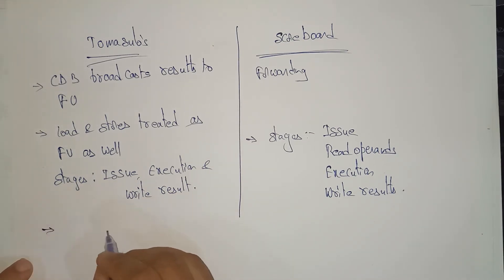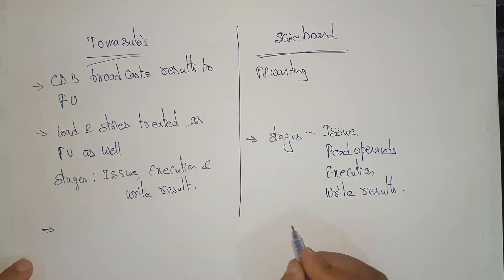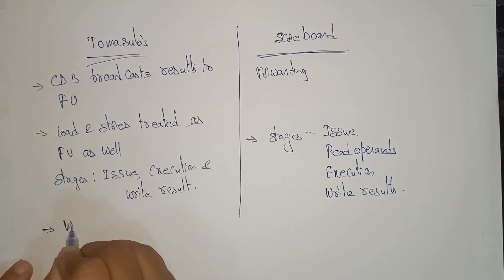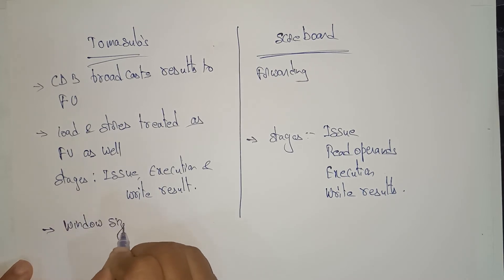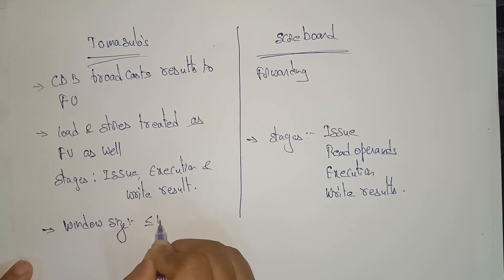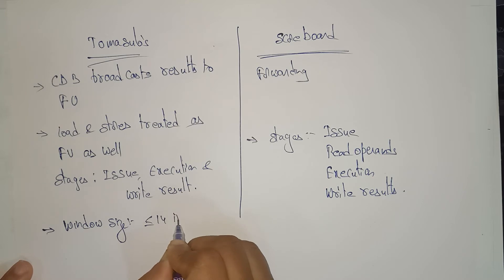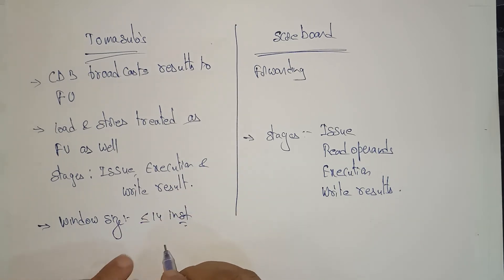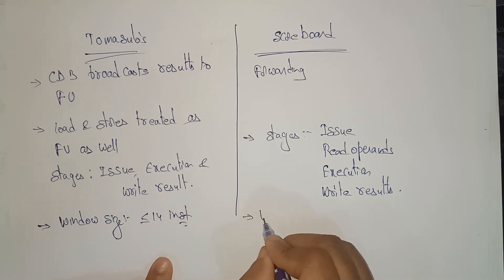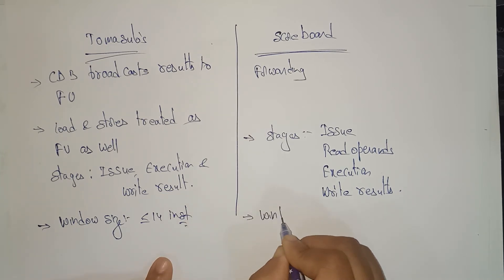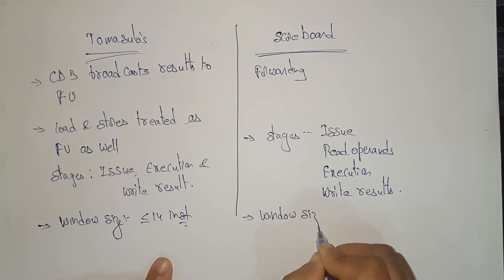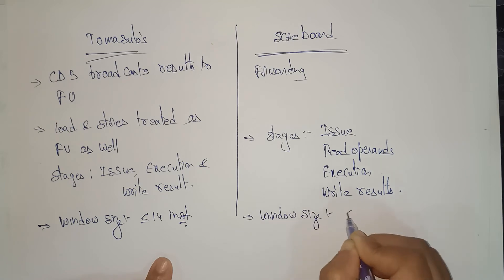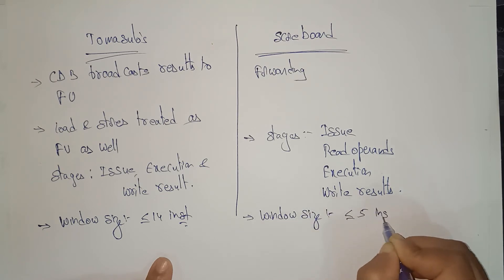Regarding window size: the window size of Tomasulo's algorithm is less than or equal to 14 instructions, whereas the window size of the scoreboard is less than or equal to 5 instructions only.